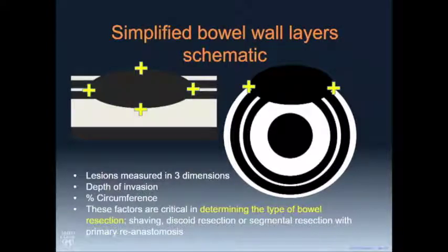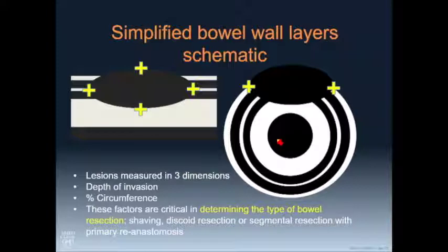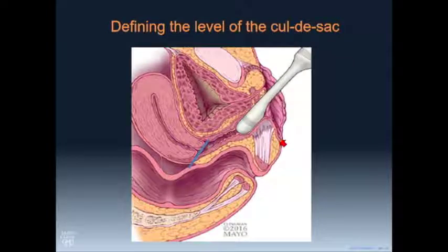If we identify a lesion, we need length and width. In particular, we want to know what percent of the bowel wall circumference is involved. If it's more than 40 percent involved or more than about three centimeters in length, that is very difficult to do a discoid resection — they almost always have to do segmental bowel resection.